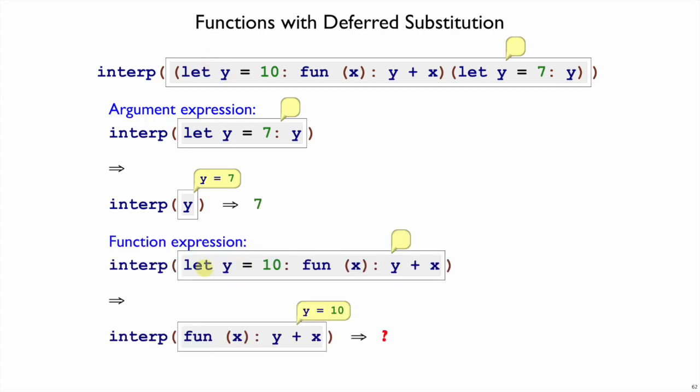And now how about the function part? Again, we start with the empty environment. We find out that y is equal to something, in this case 10, and we start interpreting the function. But now we need to return something that remembers that y is equal to 10, and in particular, we need to remember that it's this environment, not this y equals 7 environment, that is the one that's relevant.